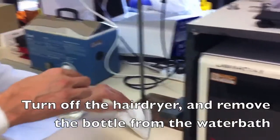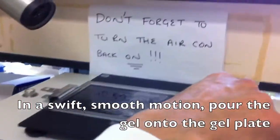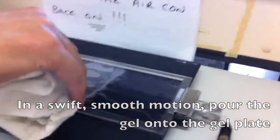Once this five minutes has elapsed, it is time to pour the gel. Turn off the hairdryer and remove the bottle from the water bath. You may want to wrap it in paper towel as it will be hot. In a swift, smooth motion, pour the gel onto the gel plate within the frame area.